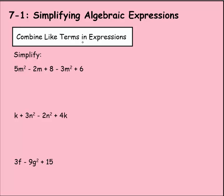Let's combine like terms in expressions then. So we're asked to simplify this term: 5m² - 2m + 8 - 3m² + 6. First, I look at exponents. So the first thing I notice here is that this is squared, as is this.